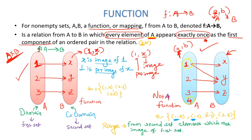Let's take another example. Here set A has four elements 1, 2, 3, 4 and set B has three elements x, y, z. For one element in set A, there are two arrows going out — meaning it maps to both x and y. That means element 1 appears twice as (1, x) and (1, y). Since each element must appear exactly once, this is not a function.